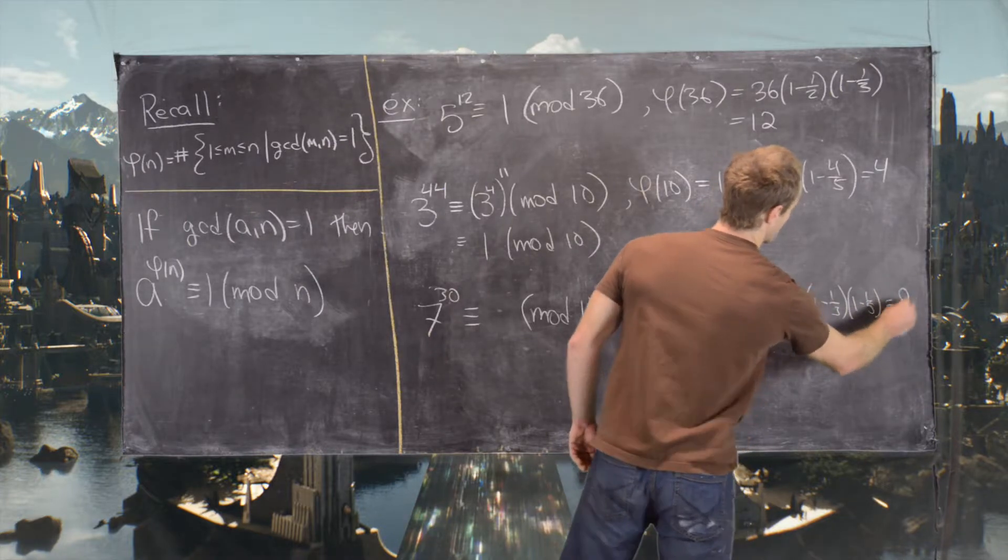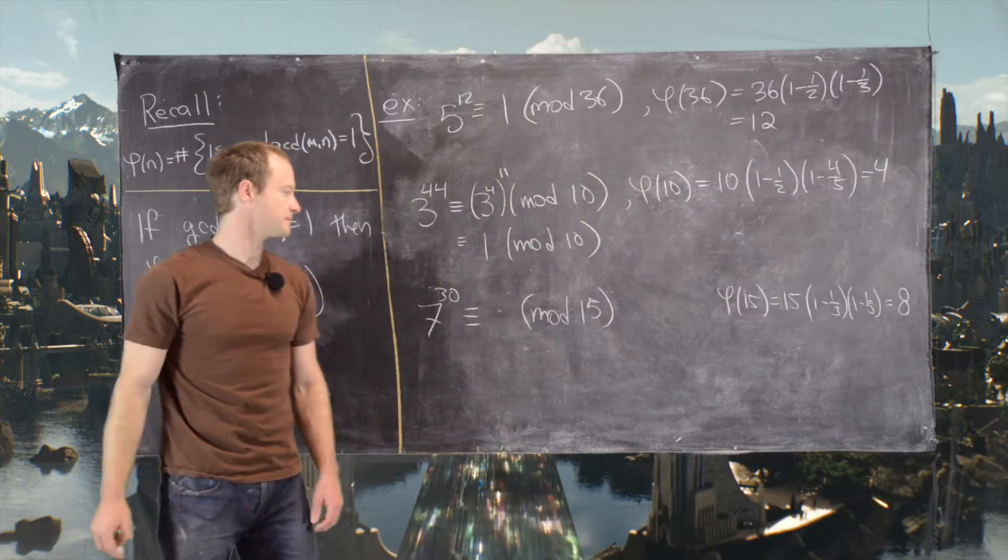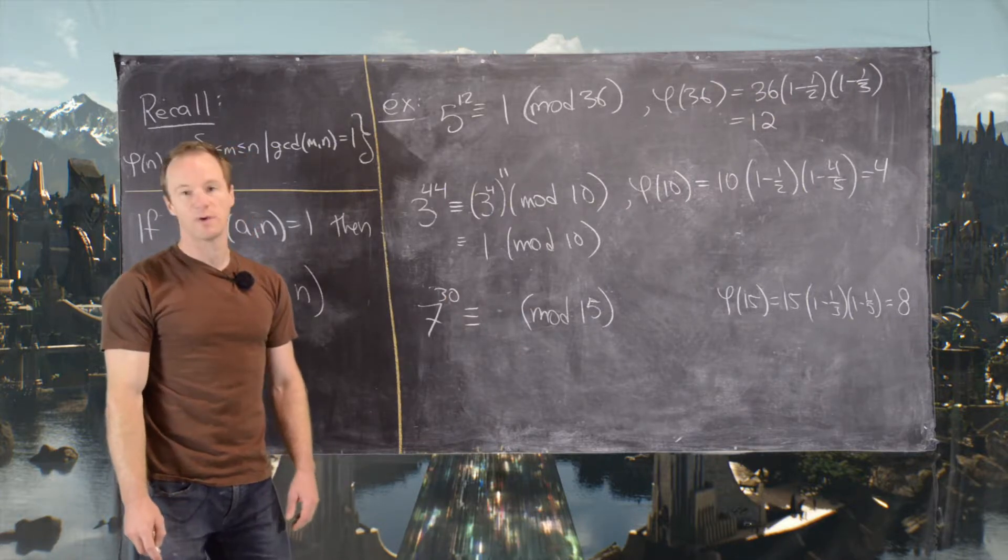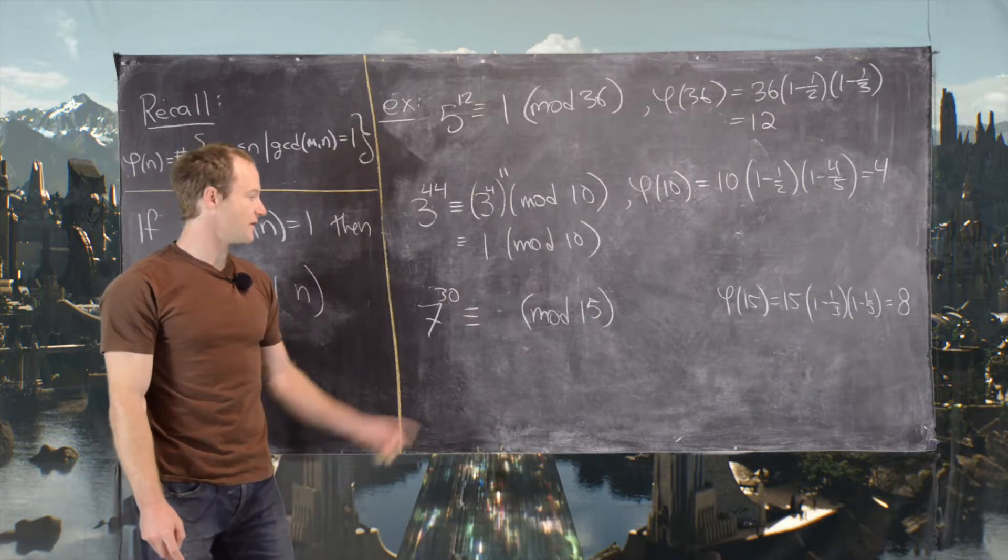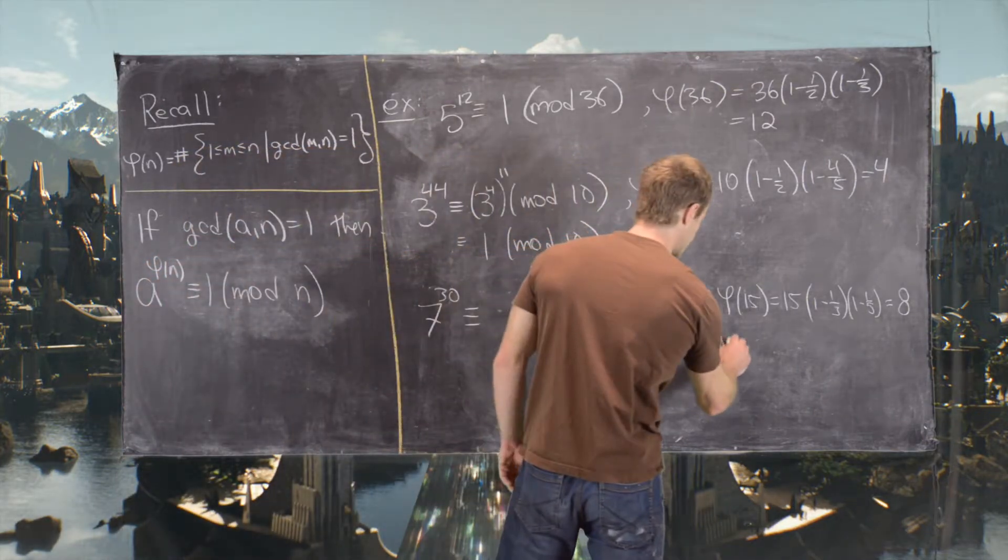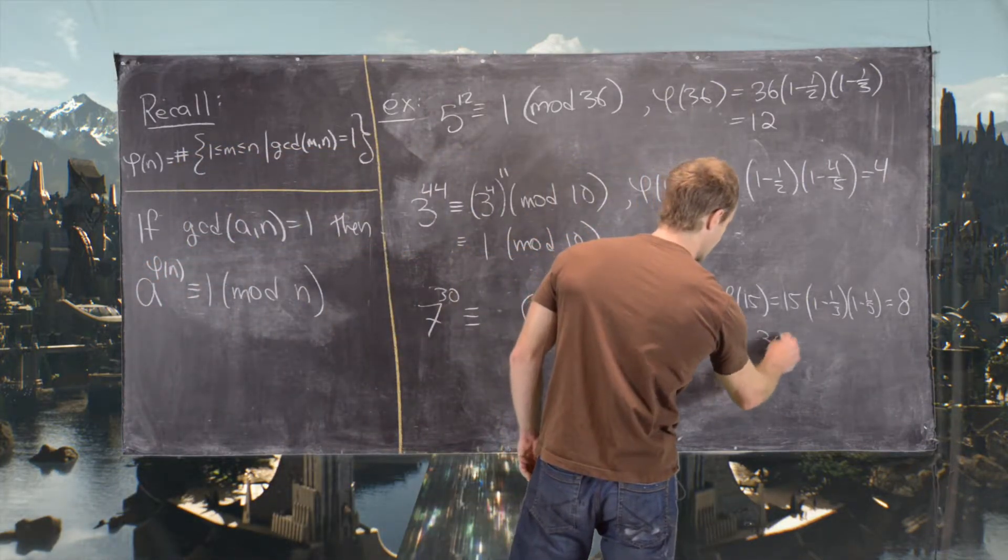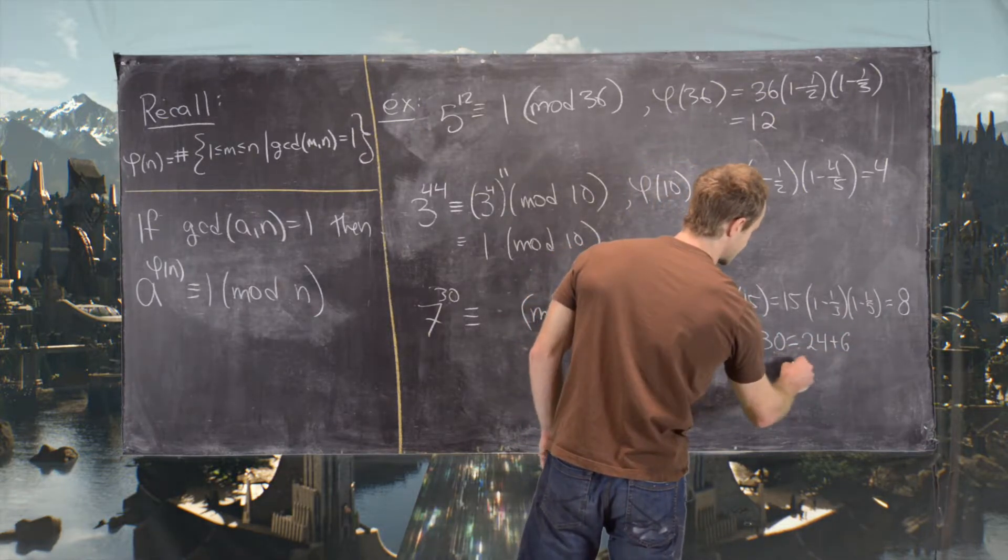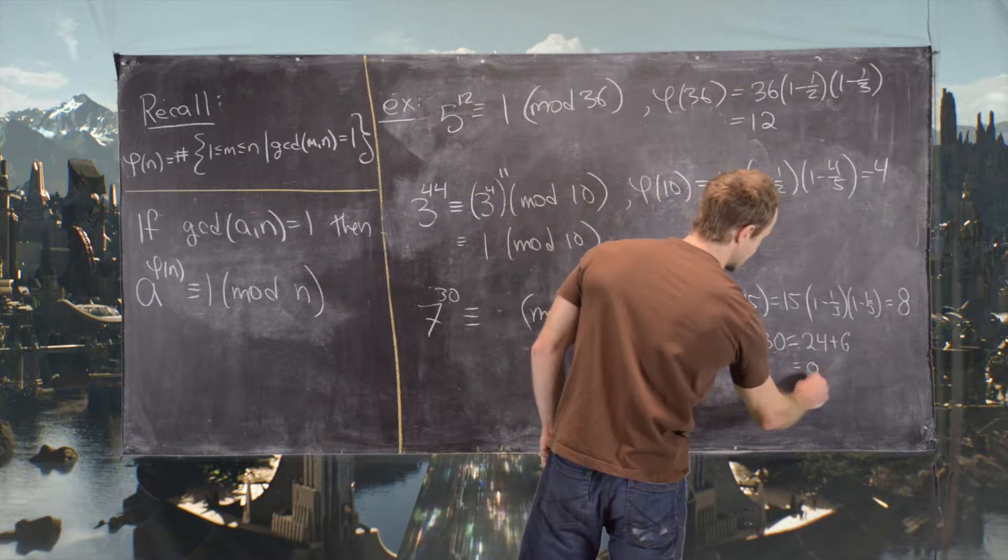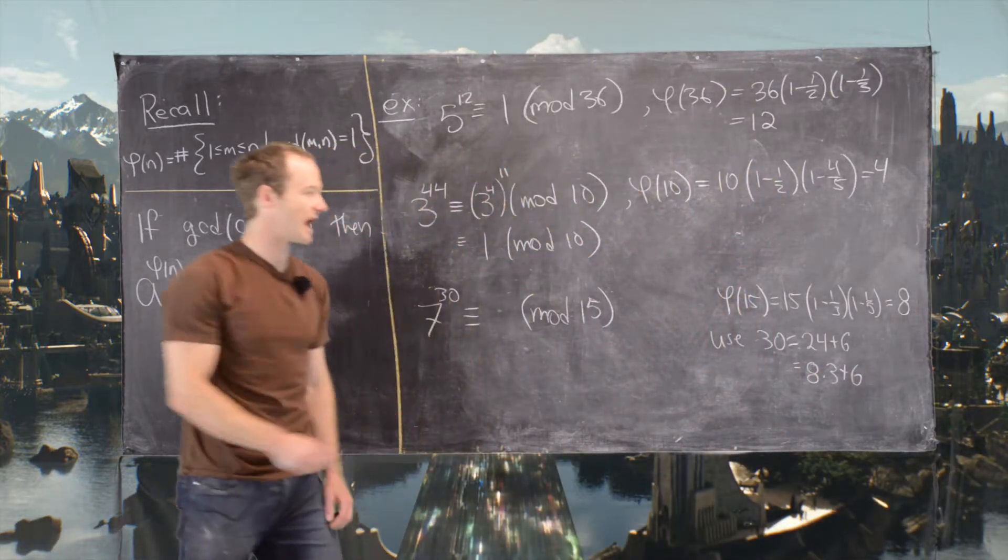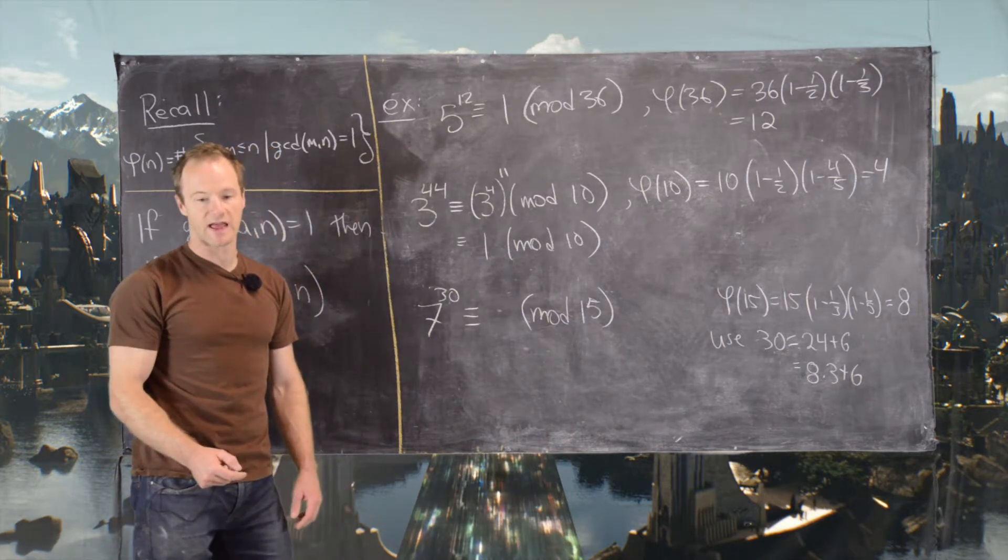Now notice 8 does not divide into 30, but we can use the division algorithm to break 30 into parts. Here's what we'll use: 30 equals 24 plus 6. In other words, this is 8 times 3 plus 6. So we'll use the division algorithm with 30 and 8.